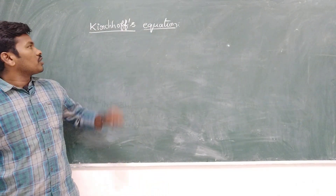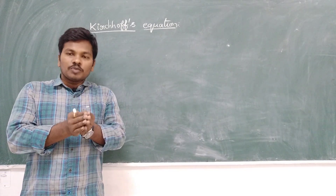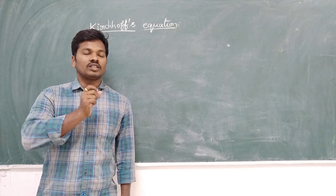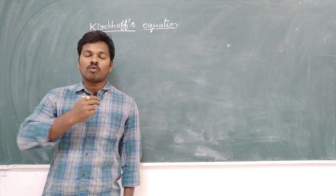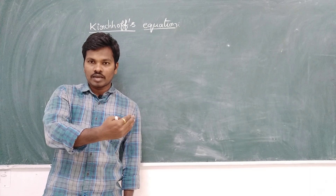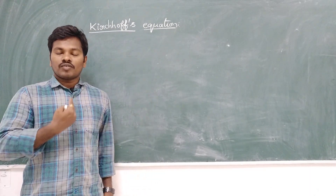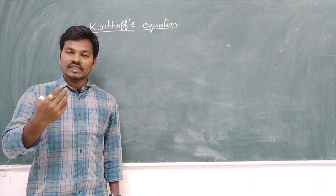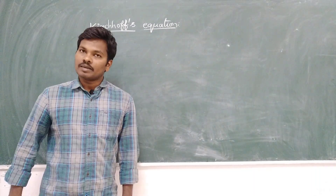Kirchhoff's equations are used when two different types of enthalpies are provided. When the enthalpy is changed and it happens at two different temperatures — when one temperature is given and we are asked to calculate the final temperature — that is when we can use this Kirchhoff equation. It is useful for the calculation of enthalpies associated with temperature.